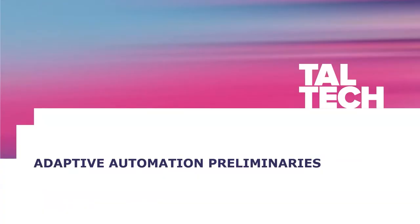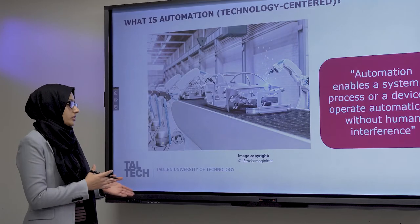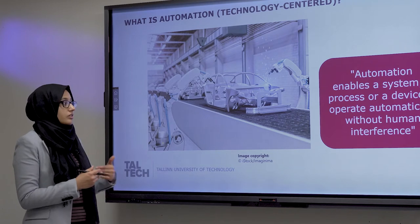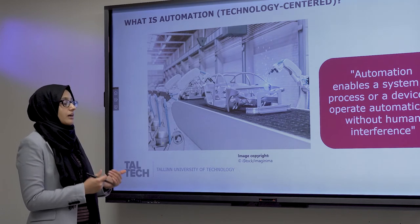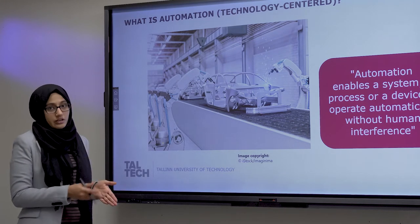Starting from the basics of adaptive automation, we first have to understand what automation is. We see automation around us everywhere — vehicles, machinery, robots and everything. In theory, automation is a process which makes a system or device work automatically without human interference. It is technology-centered and helps humans achieve a target or complete a process with minimum human interference.